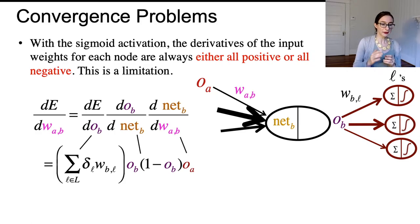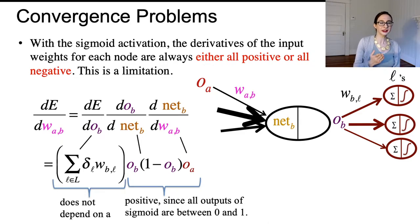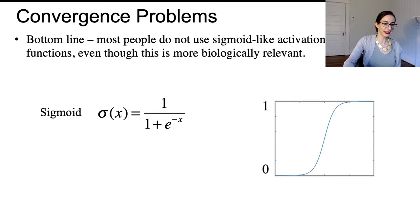The other two terms, o_b and one minus o_b, those are all between zero and one so they're all positive, and o_a is also positive. These are outputs of the sigmoid—they're all between zero and one. It doesn't matter which a you're talking about; the gradients all have the same sign, so that's problematic. The bottom line here is that most people don't use the sigmoid activation functions even though they're more biologically relevant, but who cares about the biology—these are algorithms.